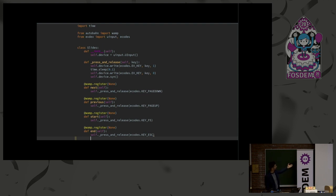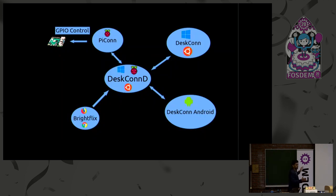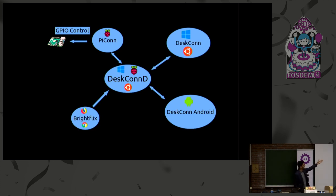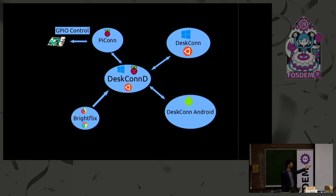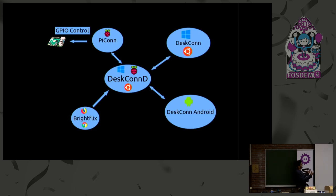Here is the overall architecture picture. The daemon itself — which is the router — is running on my desktop. I've called it deskond — the 'd' inspired by LXD and systemd naming. Then there is an Android client and a Chrome extension called Brightflix, which monitors Netflix.com and whenever it goes full screen it sends a signal to the daemon, which forwards that signal to the component running on my desktop to raise the screen brightness.